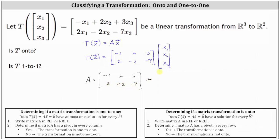I've already found the reduced row echelon form. In reduced row echelon form, the first row is one, zero, negative four, and the second row is zero, one, negative one-half. We have pivots in row one, column one, and row two, column two.